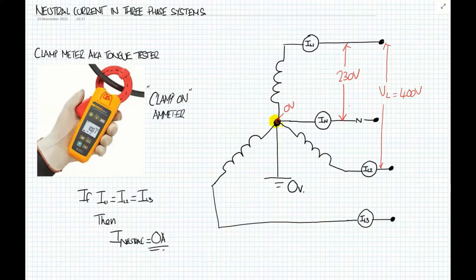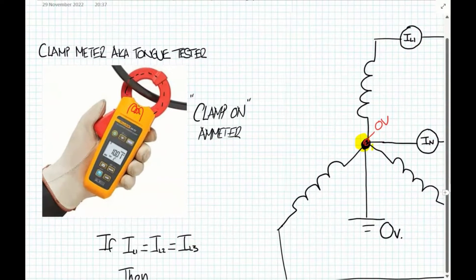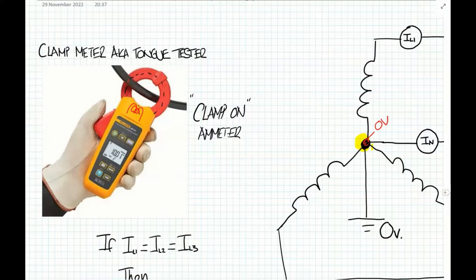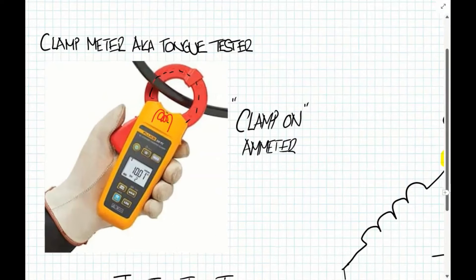If we go back to measuring neutral current, in order to measure neutral current we use what we call in the trade a clamp meter or those known as a tongue tester. Basically it's a clip-on ammeter or works like a current transformer.